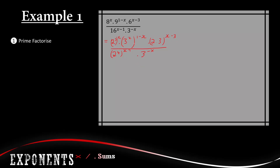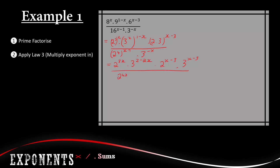For step two, we apply law three — we take the powers in and get rid of the brackets. So this becomes 2 to the power of 3x, times 3 to the power of 2 minus 2x, times 2 to the power of x minus 3, times 3 to the power of x minus 3, all over 2 to the power of 4x minus 4, times 3 to the power of negative x. That was step two. Next we want to group all the bases together.